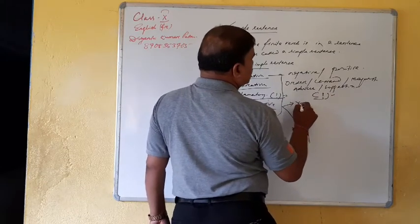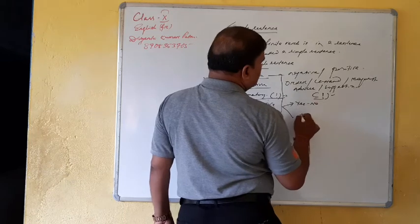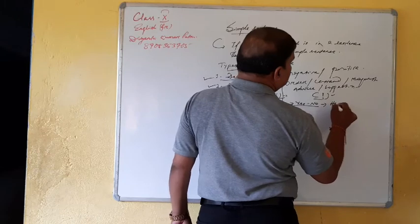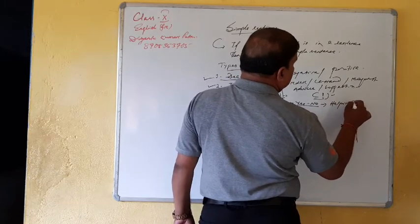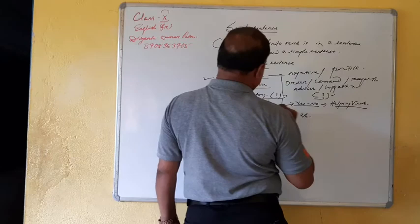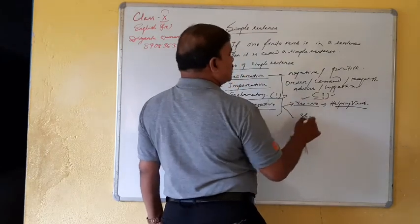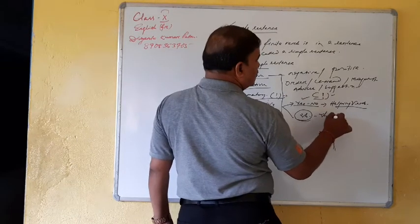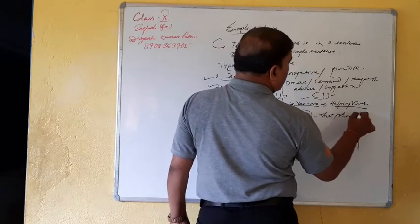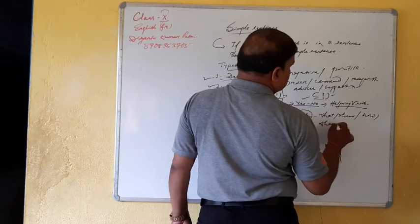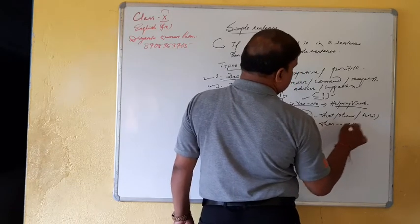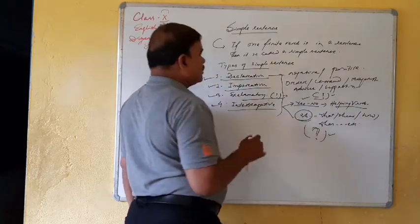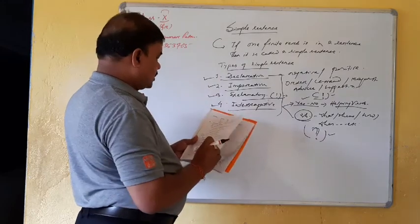But interrogative, yes, no interrogative. That if helping verb comes to the beginning, helping verb comes to the beginning of the sentence is called that is a yes, no question. If we find wh type of question, if we find wh like what, where, how, when, like this, etc. So we have a punctuation mark like this, a question mark, then we can find a decision or interrogative sentence.